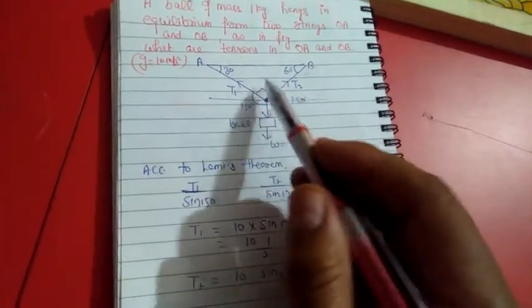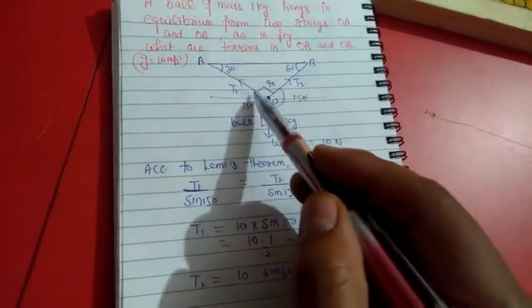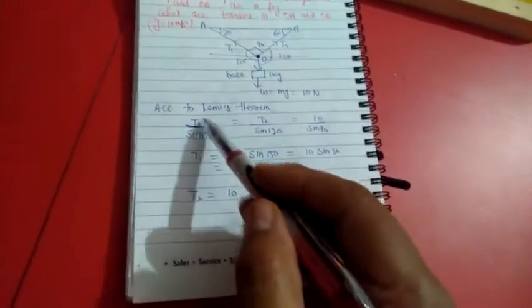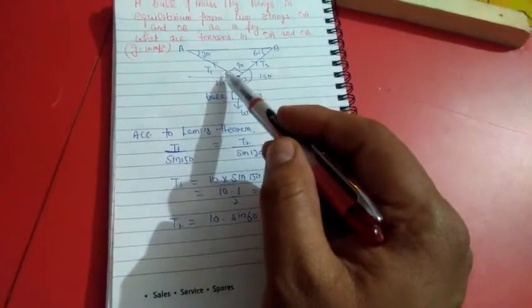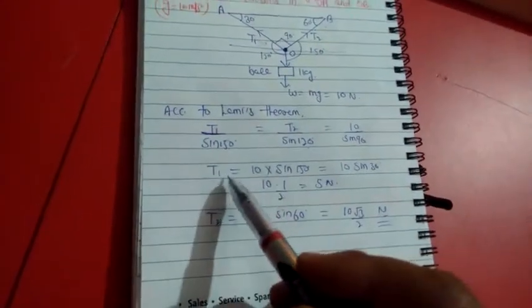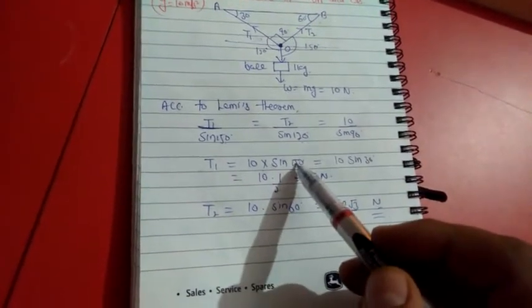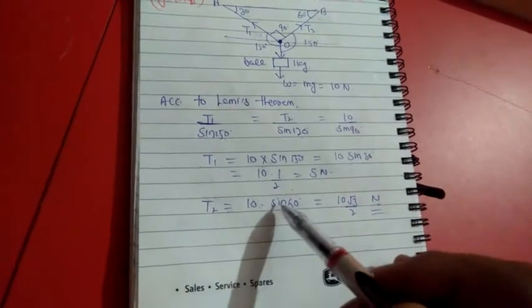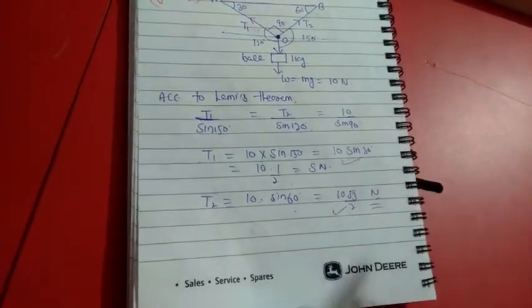Using Lami's theorem: T1/sin(angle between T2 and W) = T2/sin(angle between T1 and W) = W/sin(angle between T1 and T2). The angle at A is 30°, so the supplementary angle is 150°; the other relevant angle is 90° + 30° = 120°. Therefore T1/sin150° = T2/sin120° = 10/sin90°. Solving: T1 = 10 × sin30° = 10 × (1/2) = 5 N, and T2 = 10 × sin60° = 10 × (√3/2) ≈ 8.66 N.